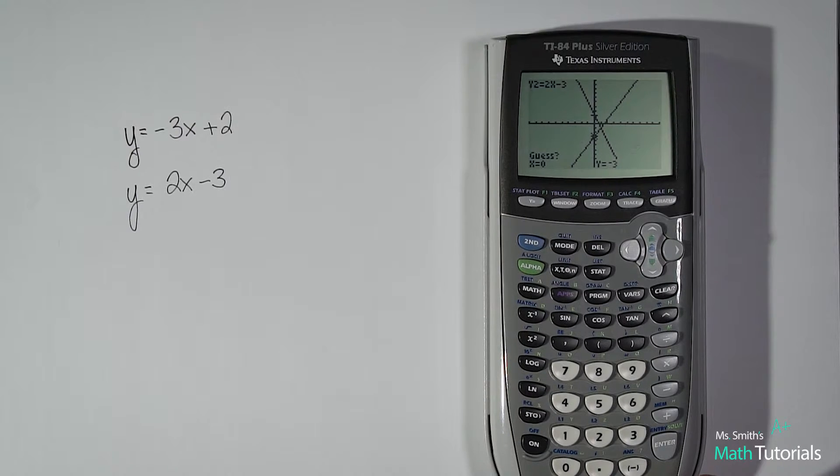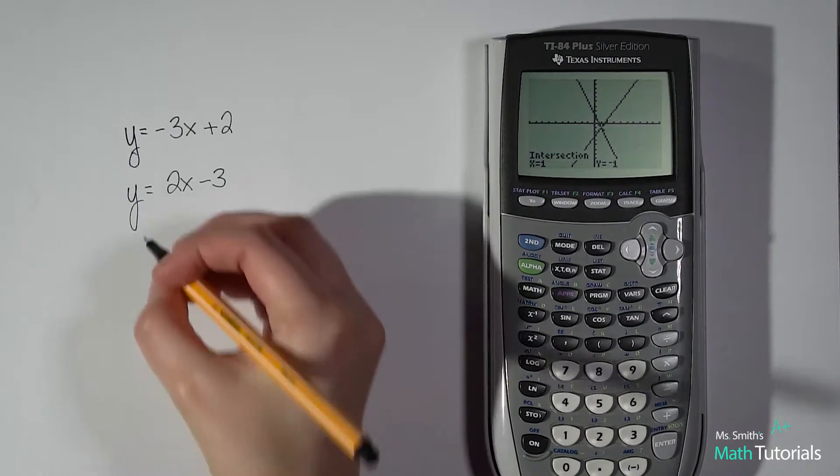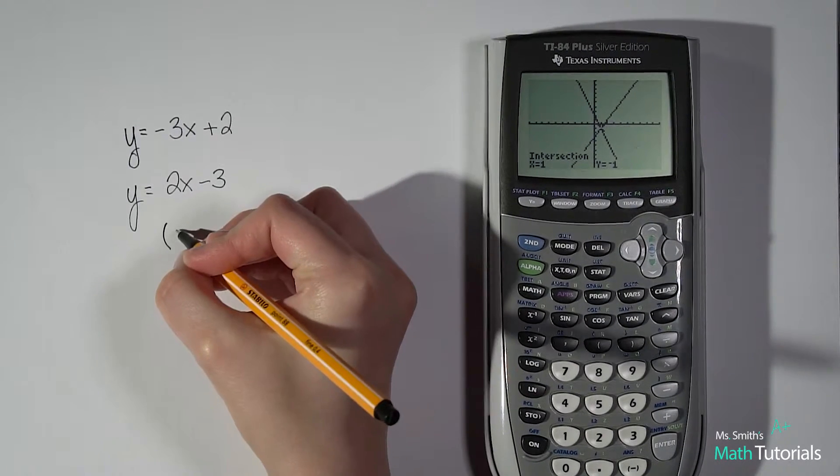And then lastly it'll say guess. So you're guessing what the intersect is. Yes. Enter a third time. And there's my intersection. So it's at 1, negative 1. And that would be my answer.